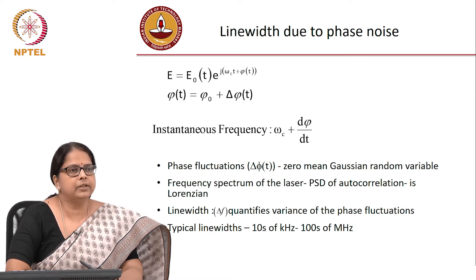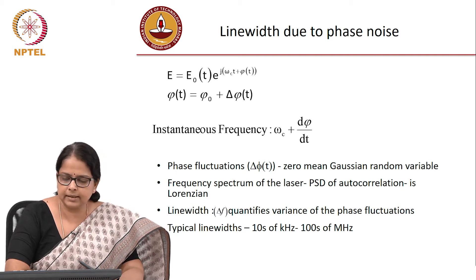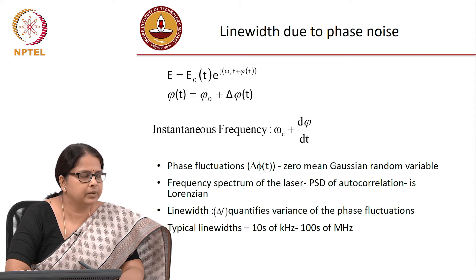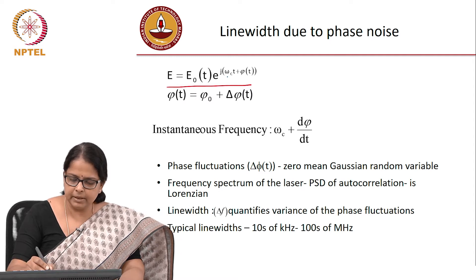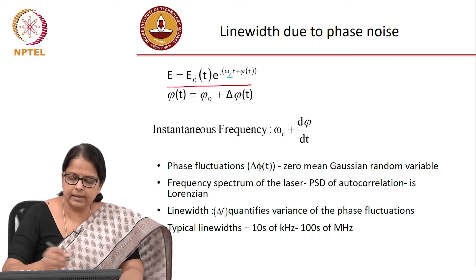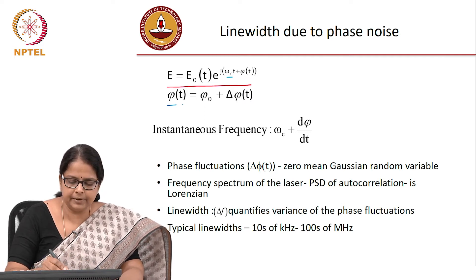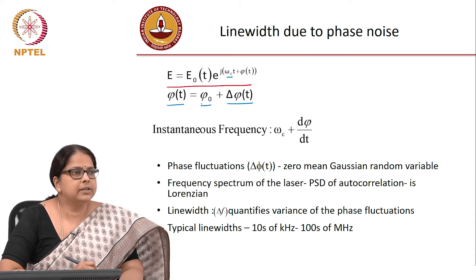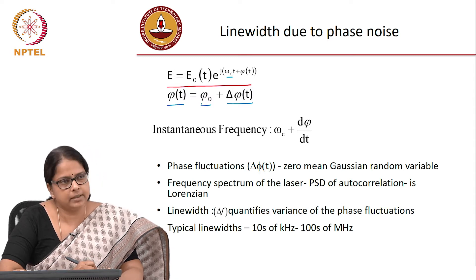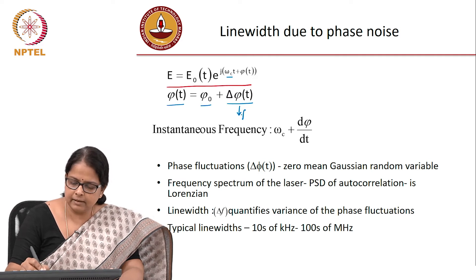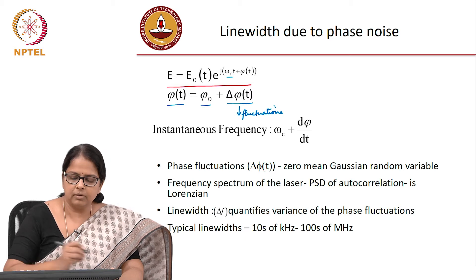The next source of noise, relevant mostly for phase modulated data, is line width — because of phase noise. The output of a monochromatic ideal laser source emits at a specific carrier frequency ω_c, with a phase φ(t) that is a function of time. There is a base phase φ₀, but there are fluctuations about it, and these fluctuations Δφ(t) lead to phase noise.